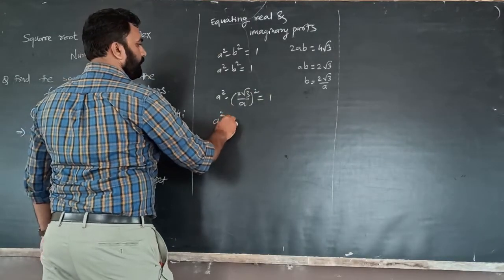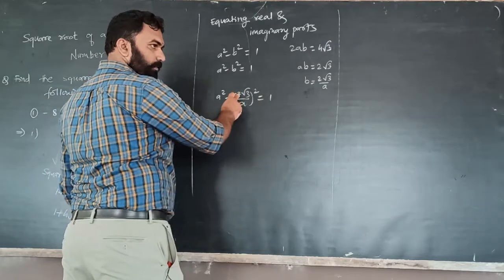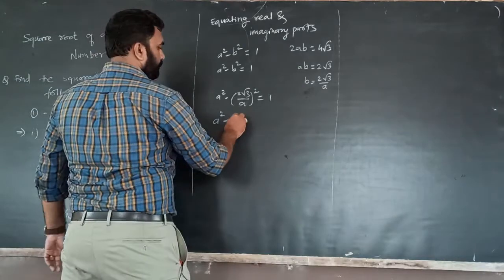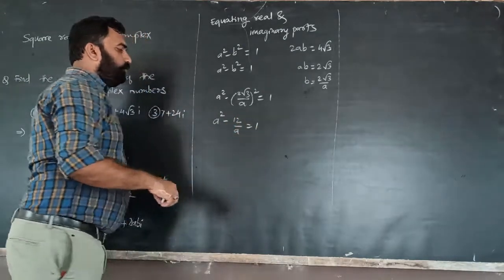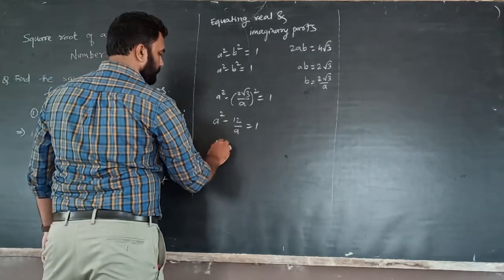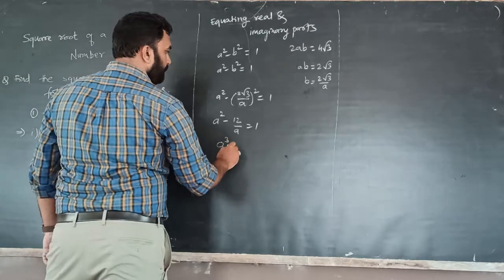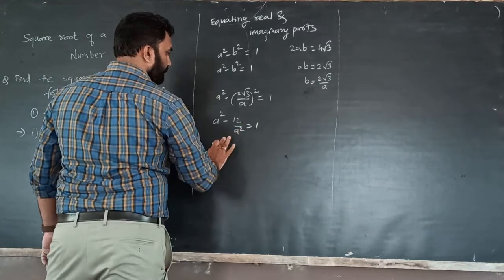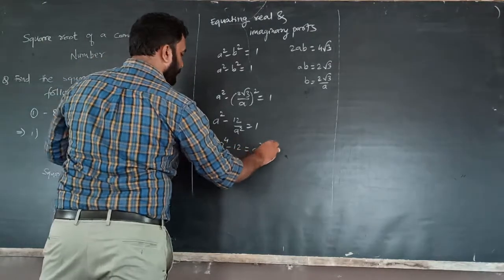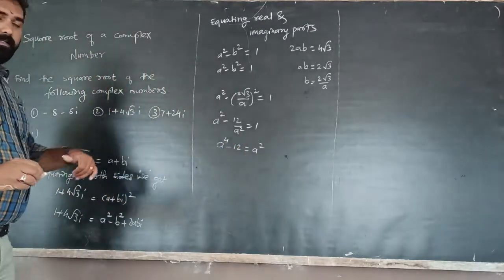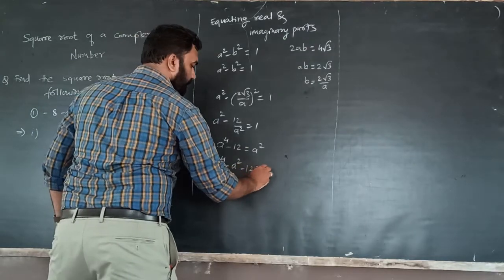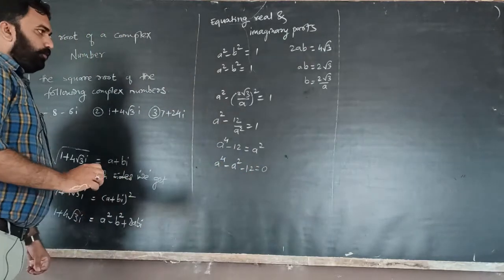From 2ab equals 4 root 3, b equals 2 root 3 over a. Substituting: a squared minus (2 root 3 over a) squared equals 1. That gives a squared minus 12 over a squared equals 1. Cross-multiplying: a to the 4th minus 12 equals a squared, so a to the 4th minus a squared minus 12 equals 0.